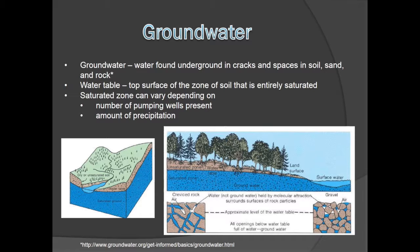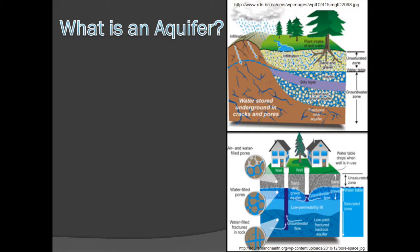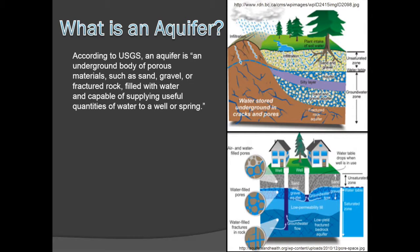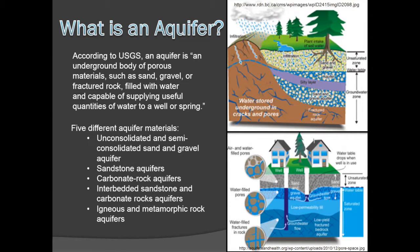Groundwater is stored and transported through geographic formations known as aquifers. Does anyone know what an aquifer is? Aquifers are underground bodies of porous materials that store enough water to supply a well or spring. Not all aquifers are made up of the same materials. There are five different types of aquifer materials: unconsolidated and semi-unconsolidated sand and gravel aquifers, sandstone aquifers, carbonate rock aquifers, interbedded sandstone and carbonate rock aquifers, and igneous and metamorphic rock aquifers.